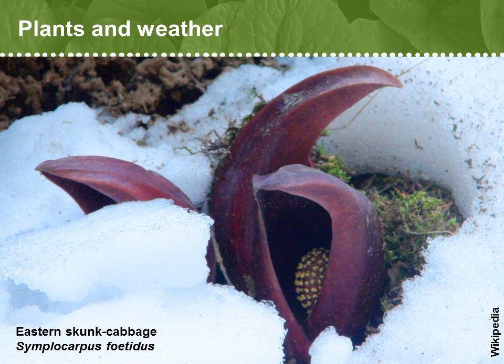Plants adapt to weather in the short-term by all sorts of plastic responses, much as we don an umbrella during a rainstorm. Some unusual plants actually buck the weather, such as in an early spring snowstorm. The eastern skunk cabbage, Symplocarpus foetidus, can melt the snow surrounding its blooming flower, because it uses a unique chemical respiratory pathway that emits heat, as well as the stinky smell that attracts flies to pollinate it.